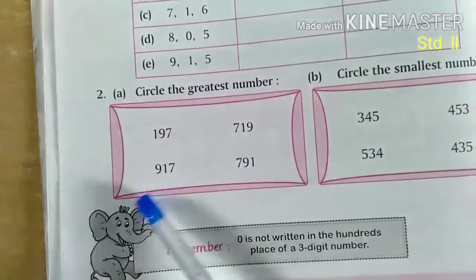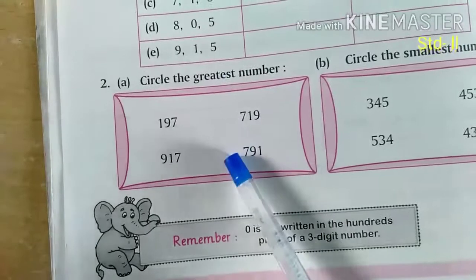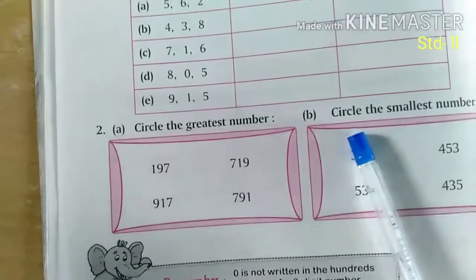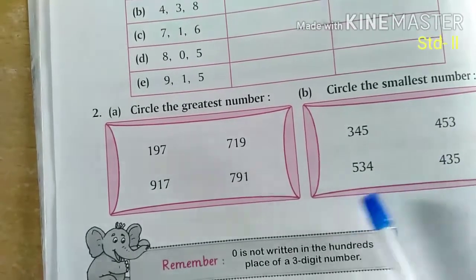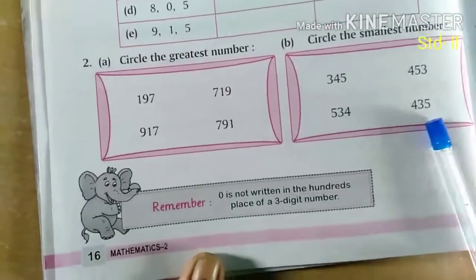circle the greatest number. Look, read the numbers and circle the greatest number. And then this also, circle the smallest number. Read the numbers and circle the smallest numbers. Ok, thank you.